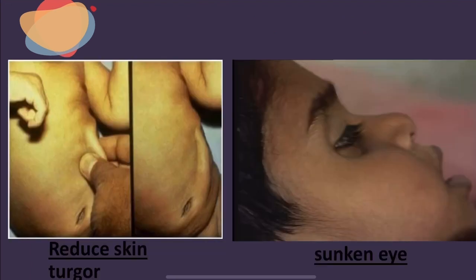You can see here the skin turgor — the skin pinch. We pinch the skin in the abdomen between the thumb and first finger. If it returns after more than 2 seconds, this means severe dehydration — very delayed. And in this picture we see the sunken eyes of the baby, which are very sunken, meaning severe dehydration.